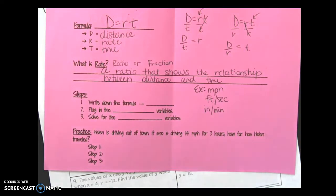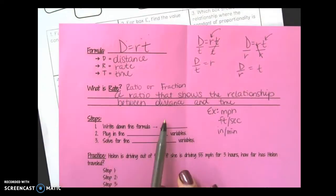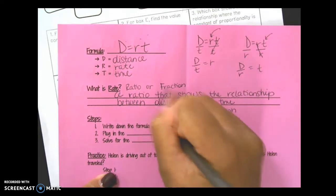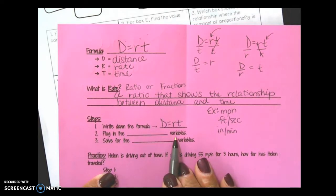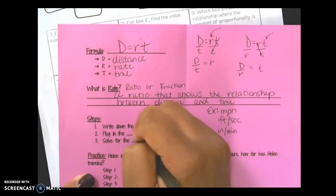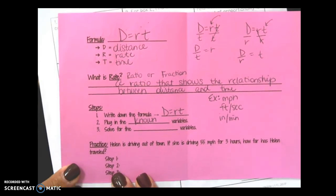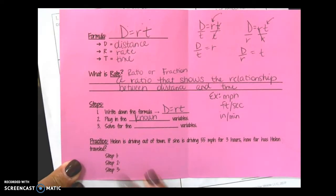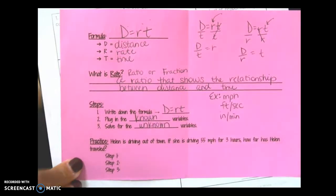The steps in solving this problem are to write down the formula. We've already written it down so copy it again down here. Plug in the blank variables. That means plug in what you know, those are the known variables. Then solve for the, well what's the opposite of known? Solve for the unknown variables.